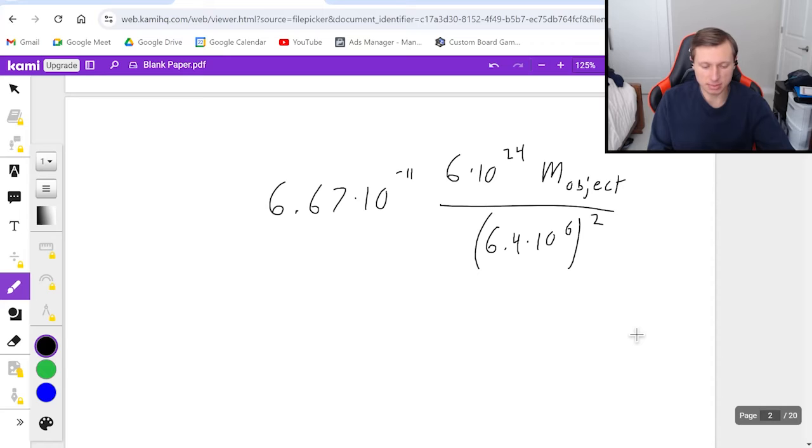And now if I actually plug in these numbers into my calculator, 6.67 times 10 to the minus 11th, times 6 times 10 to the 24th, divided by 6.4 times 10 to the sixth, and that's squared, then this will simplify to 9.77 times the mass of our object.